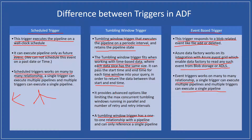One advanced feature in tumbling window trigger is that it provides some advanced options like limiting the max concurrent tumbling windows running in parallel, and number of retries and retry intervals. Let me show you an example directly on Azure Data Factory so we can make it clear what the differences are. Let me take you to the portal right now and create a sample pipeline quickly.